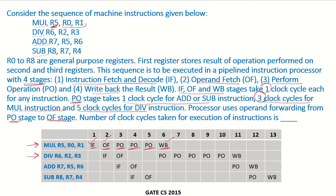Next comes the div instruction. We first check whether there is any data dependency between these two instructions — there is none. So we start with instruction fetch in the second clock cycle, then operand fetch. After operand fetch, the perform operation stage is not available because it is still executing the mul instruction. We wait until the perform operation unit is free at clock cycle six, then it is given to the div instruction. Since div requires five clock cycles for perform operation, followed by write back.